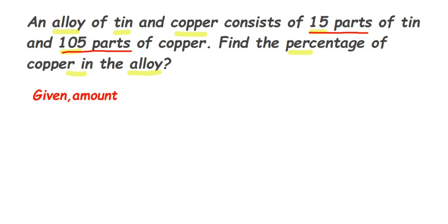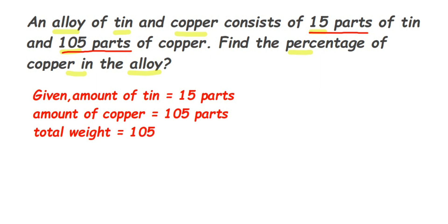Amount of tin is equal to 15 parts. Similarly, amount of copper is equal to 105 parts. So total will become, so total weight will be, so 105 plus 15 when you do it, it will be equal to 120 parts. So total is 120.